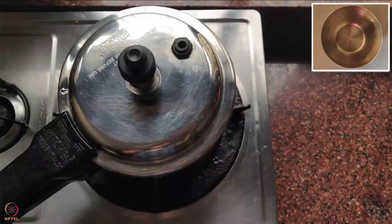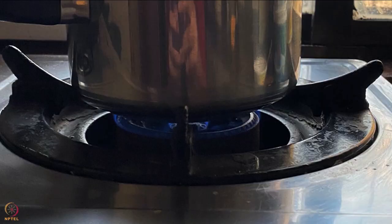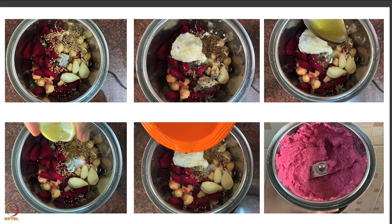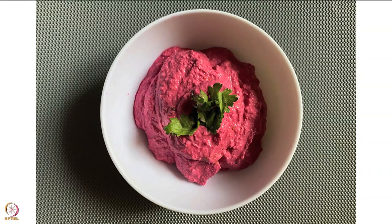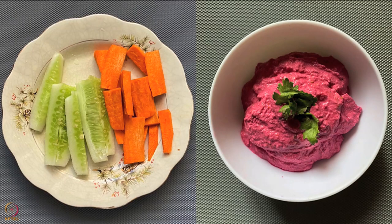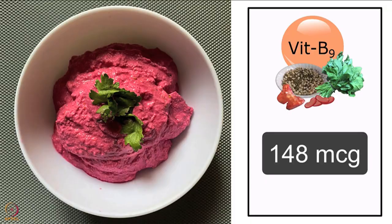Once sprouts appear, pressure cook them with half a cup of water on medium flame for 3–4 whistles. Let the pressure release on its own, then open the cooker. Put the sprouted chickpeas in a mixer, add the rest of the ingredients, and make a smooth paste. Chickpeas dip is ready. You can have this 1–2 times a day along with your meals or dip sliced carrots and cucumbers in it. One-fourth cup of this dip gives about 148 micrograms of folate.